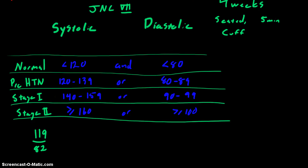So what would you say? Well, we know that the 119 systolic is in the normal range. But the diastolic — 82 — is in the prehypertension range. So we'd say Fred has prehypertension.